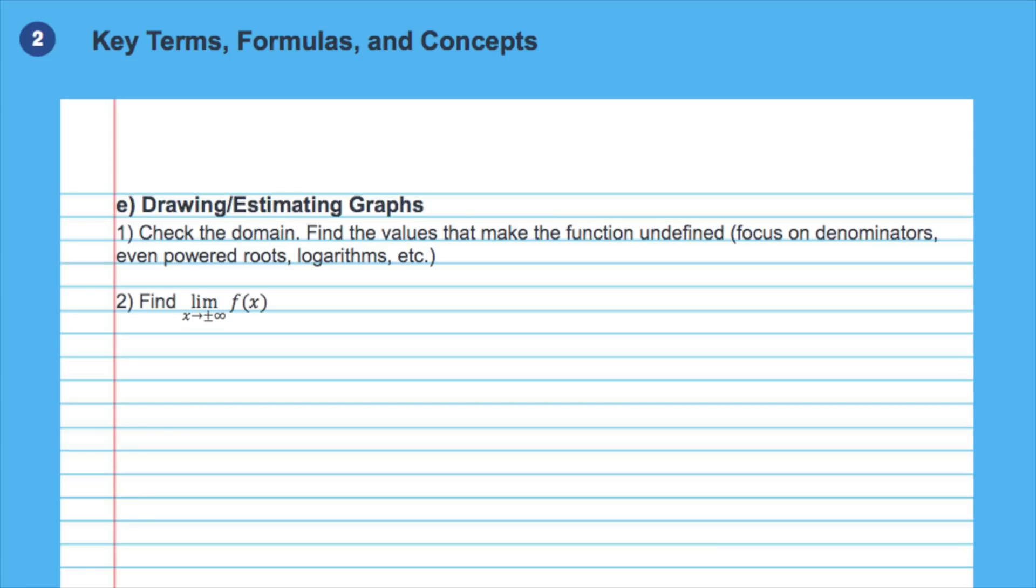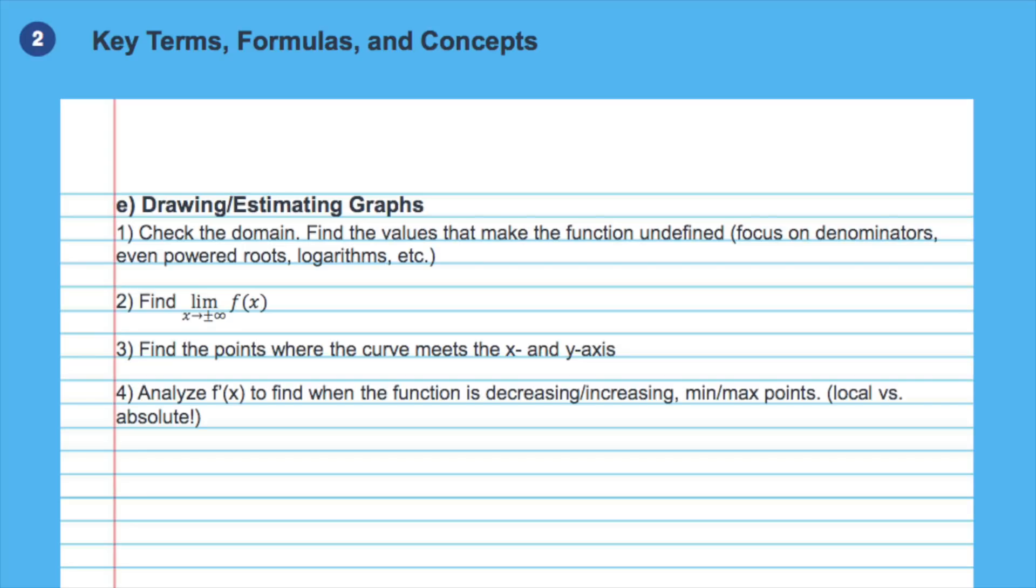After, find the limit of the function going to plus and minus infinity to be able to imagine the curve on a bigger scale rather than a small interval. After, find the points where the curve meets x and y axes. As a final step, use the first and second derivative to determine the direction of change and the concavity of the curve. Make sure to note local and absolute extrema points and inflection points.